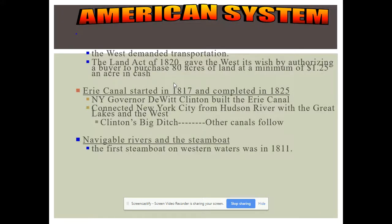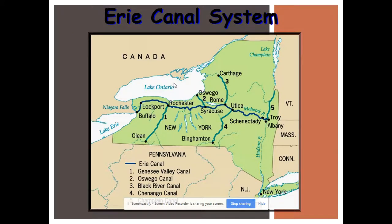One internal improvement not funded by the federal government was the Erie Canal, funded by New York Governor DeWitt Clinton. It was dug primarily by Irish workers over about eight years, connecting Lake Erie to the Hudson River — starting at Buffalo and ending just north of Albany. It was probably the most economically beneficial infrastructure project in American history. Remarkably, today, outside of the New York City metro area, roughly 50 percent of upstate New York's population lives within 25 miles of the Erie Canal.